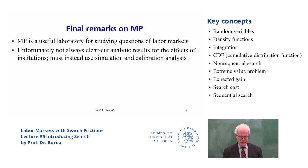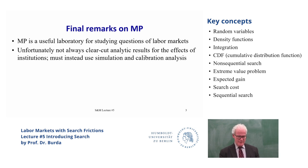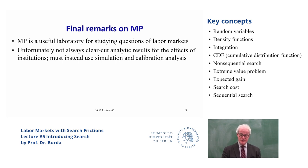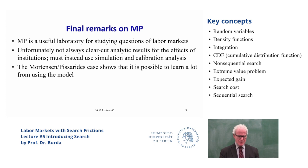Because many of these institutions have effects that are not black and white — they actually often have ambiguous effects. For example, job protection, in the sense of imposing a tax on firing, has ambiguous effects. It will reduce the number of vacancies posted at any level of unemployment, but it will also reduce the amount of severance because it's costly to do so. To find out the answer, you need to use calibration and simulation of well-specified models.